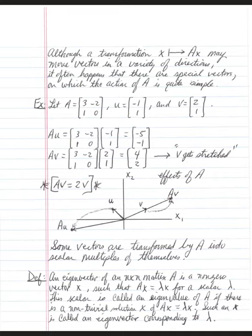Vector U is negative 1, 1. So that vector points into this quadrant. By multiplying it by A, that vector gets transformed or moved to negative 5, negative 1. So there wasn't a scalar multiplication in the transformation of U to AU. Some vectors are transformed by matrix A into scalar multiples of themselves. And that's what we're going to look at in this video.